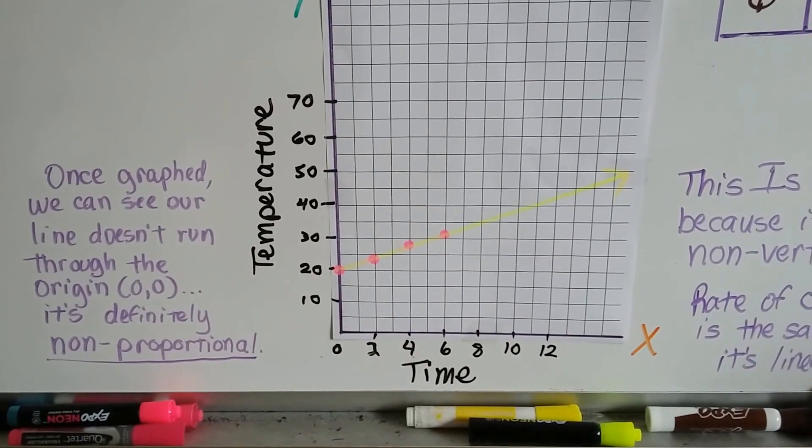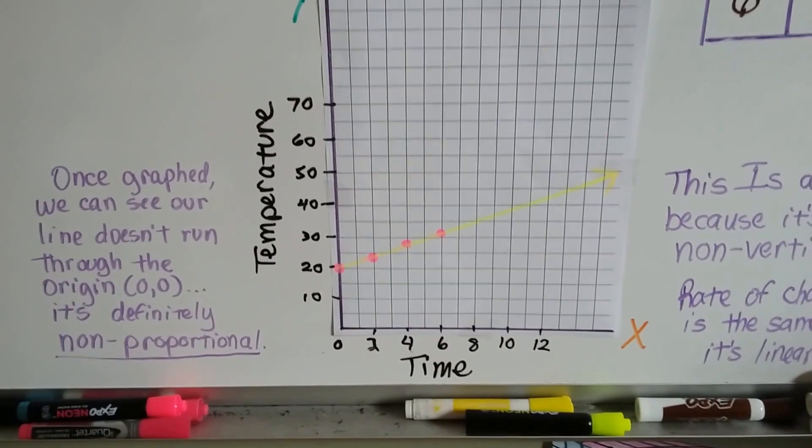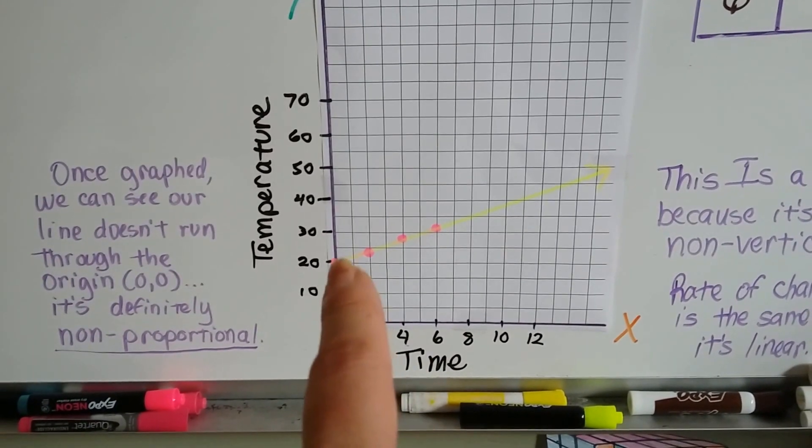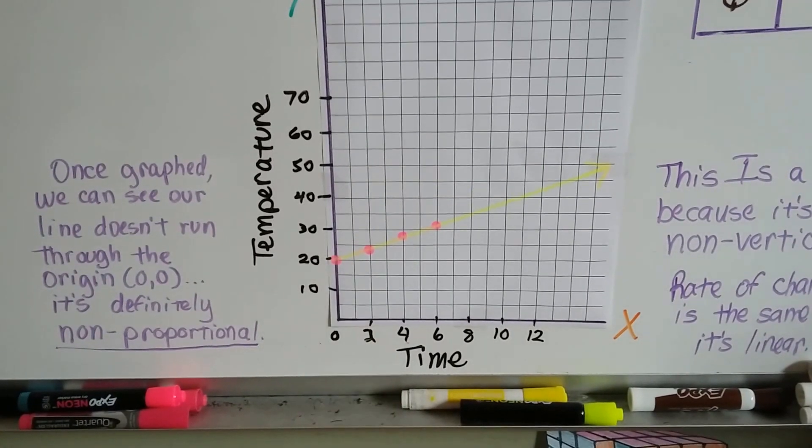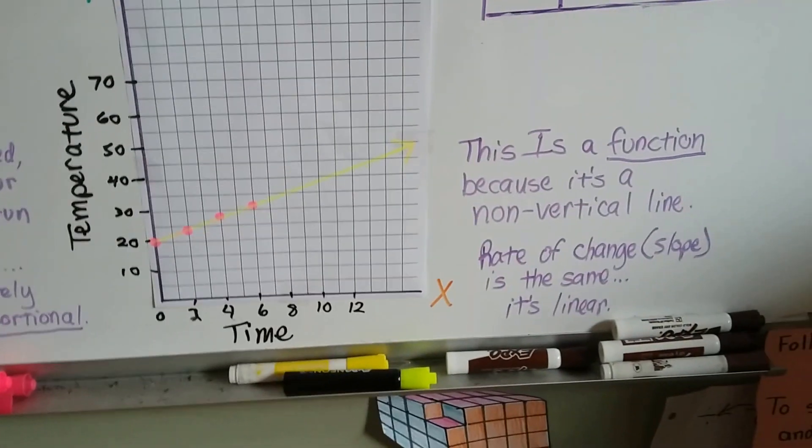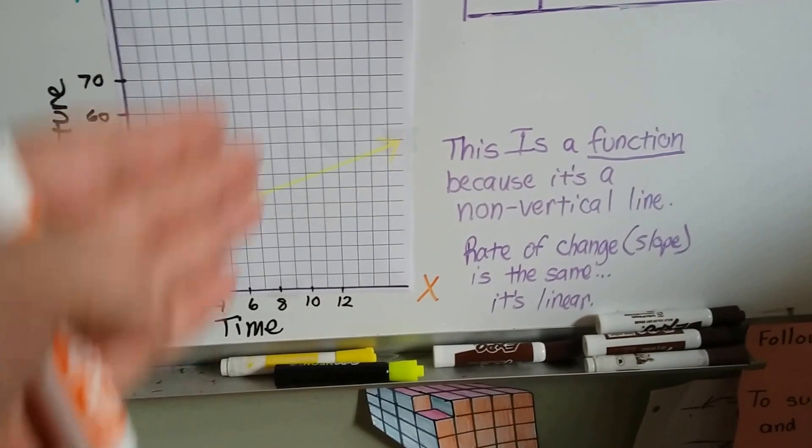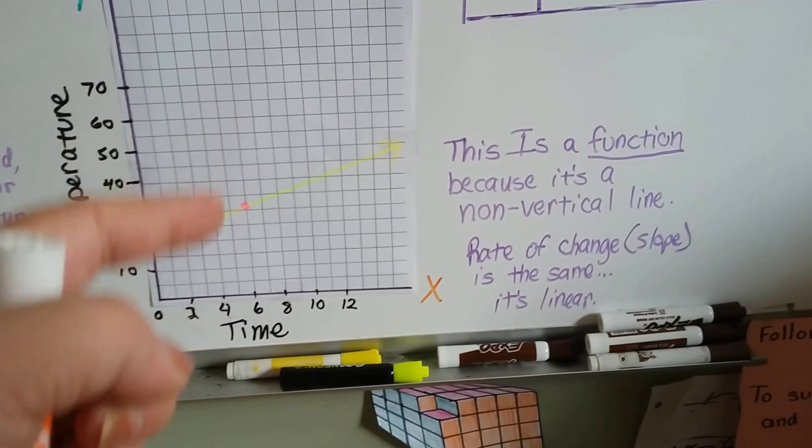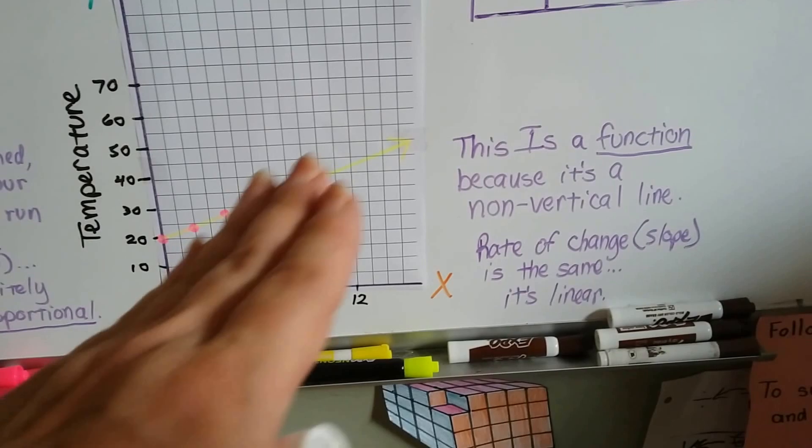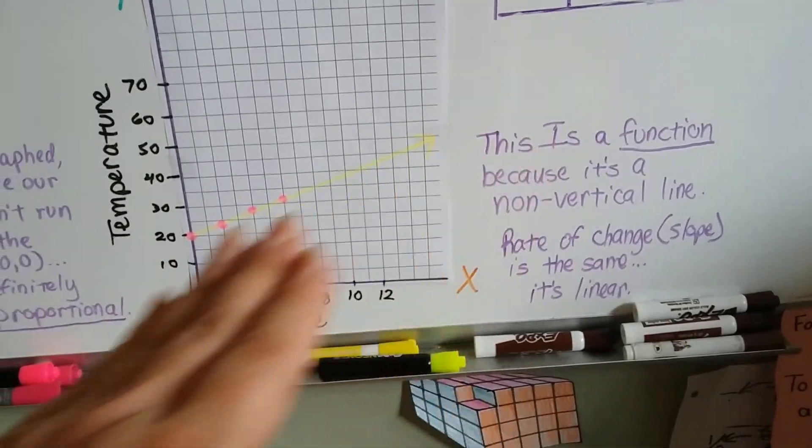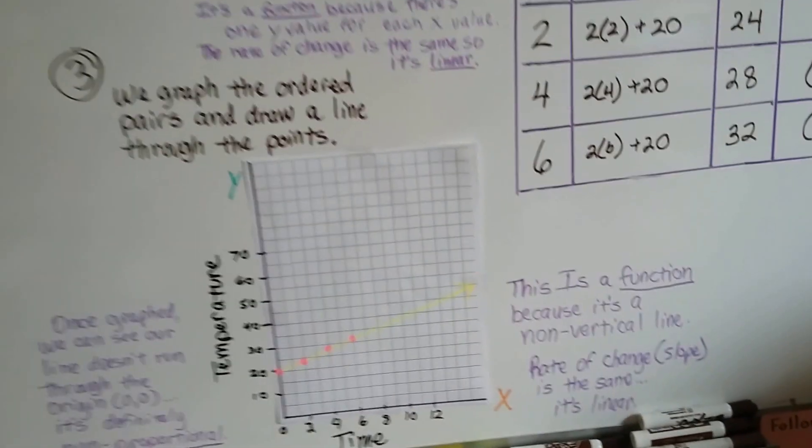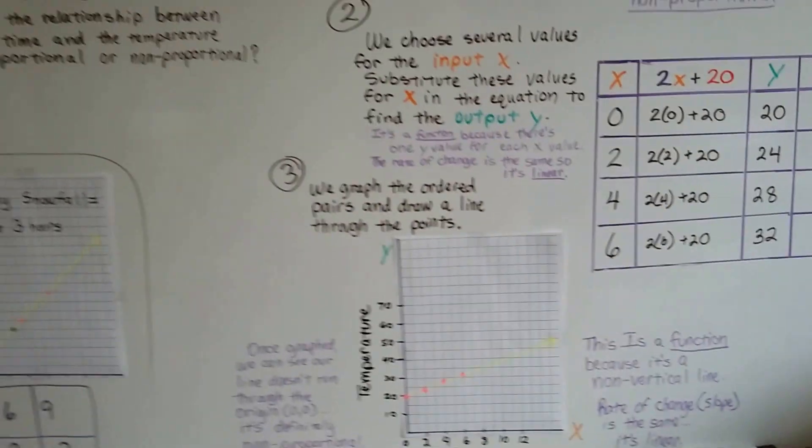But once graphed, we can see our line doesn't run through the origin 0, 0. It's at a 20 on the y. So it's definitely not proportional. And it is a function because it's not a vertical line. There's not points stacked. And we can see our rate of change is the same. So it's linear. See all the things that we can see from equations and tables and graphs?